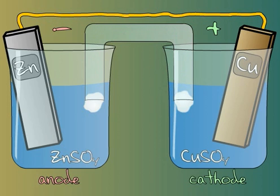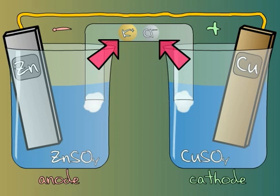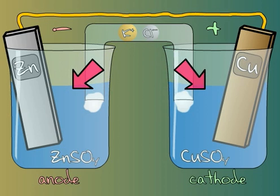The salt bridge contains a salt, positive and negative ions, which can independently migrate into the two half-cells to preserve electrical neutrality in each half-cell as the reaction runs.